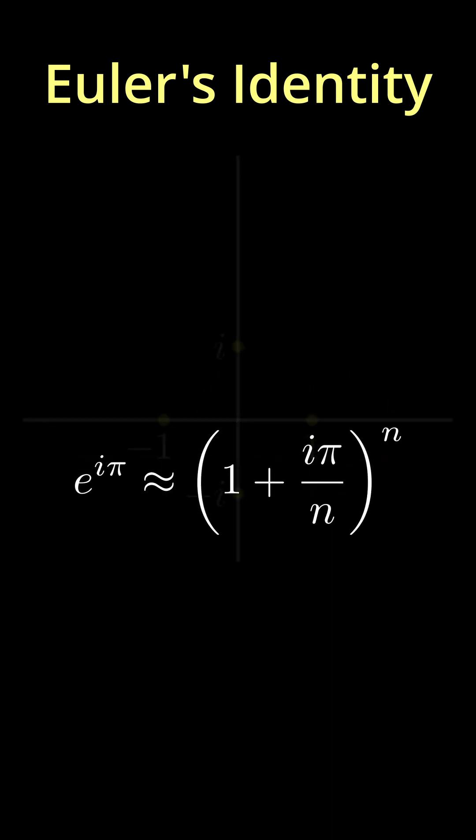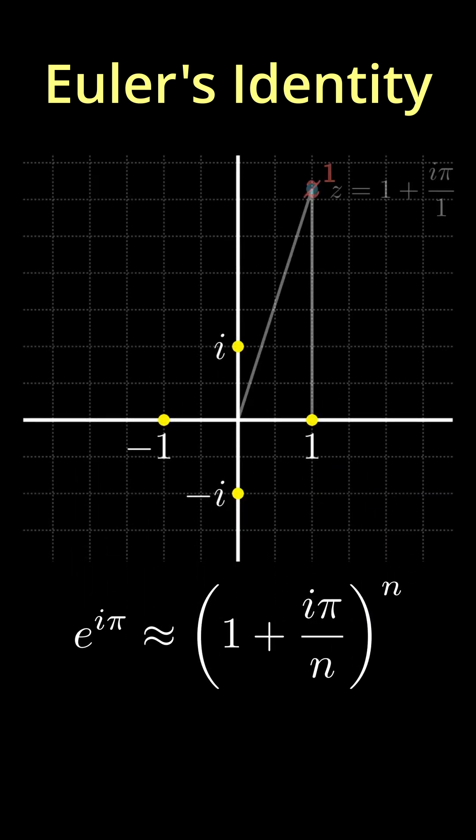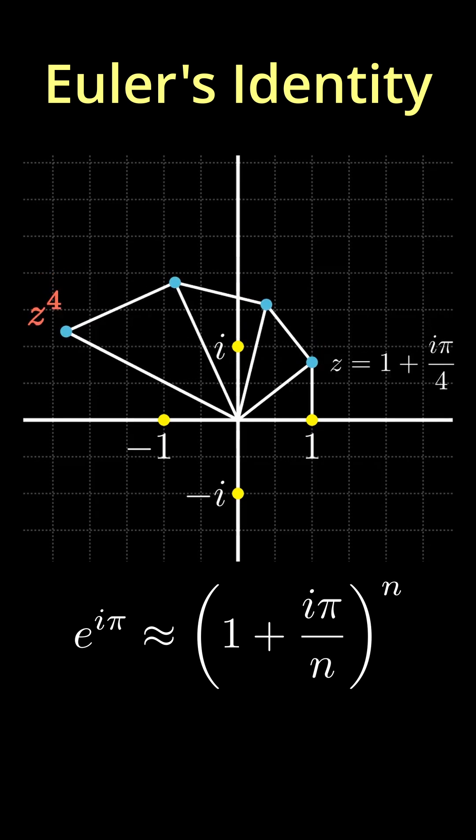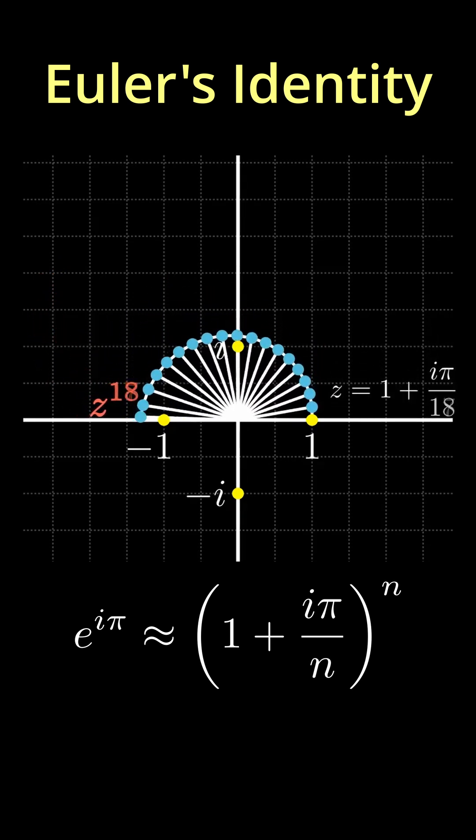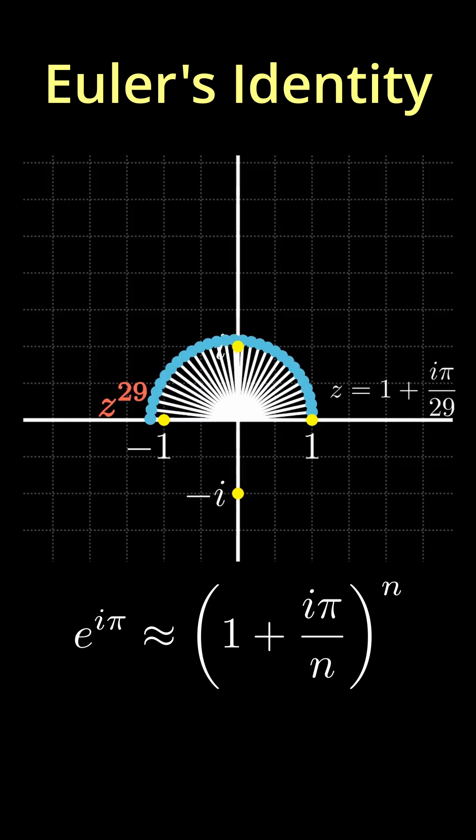And let's plot this on the complex plane. As n increases, the powers of one plus i pi over n, well, they approximately wrap halfway around the unit circle and coincide with minus one.